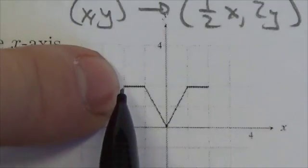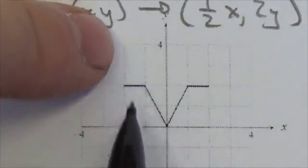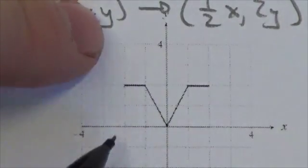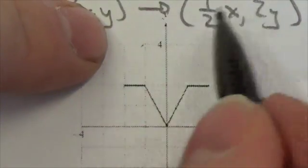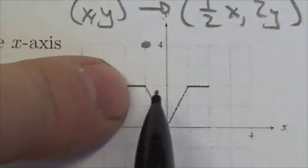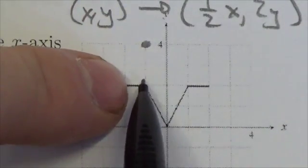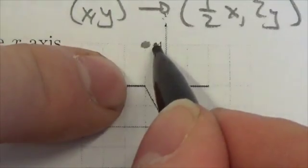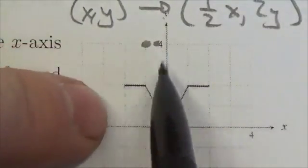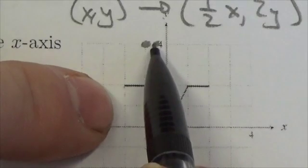So here, this point here is going to go up twice the distance from the x-axis, but half the distance to the y-axis. So there we go. This point right here is going to go up, and then it's going to move in half the distance. So because it was at negative 1, now it's going to be at negative a half here.